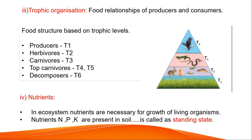Herbivores are kept under T2 level, followed by T3 level. T4 is top carnivores. All producers are plants. Herbivores depend on producers for food. Carnivores depend on herbivores for food. Top carnivores depend on herbivores or carnivores. These are all kept under trophic levels up to T5. Decomposers — bacteria and fungi — are kept under T6. They act on dead plants and animals for food and recycling of minerals.